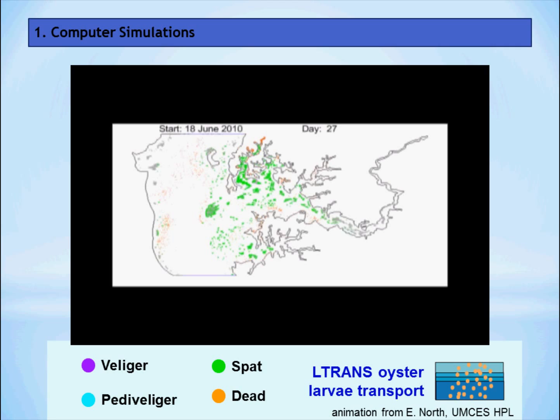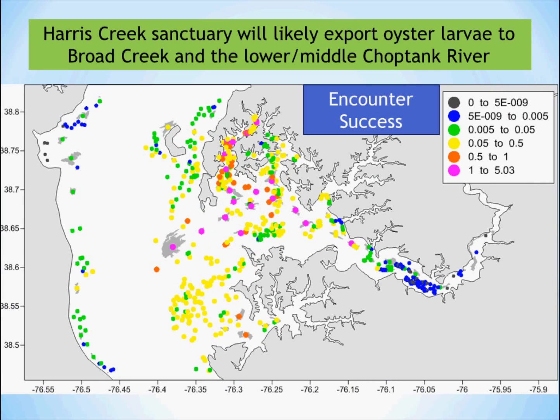We use this information to determine how the Harris Creek Sanctuary can spread oyster larvae throughout the Choptank River. The larval transport model predicts that the Harris Creek Sanctuary will likely export oyster larvae to Broad Creek and the lower and middle Choptank River.